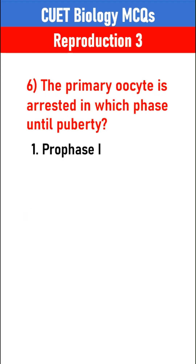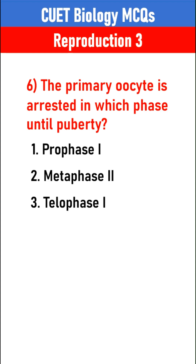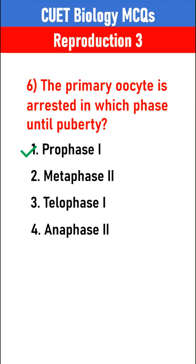The primary oocyte is arrested in which phase until puberty? Prophase 1.